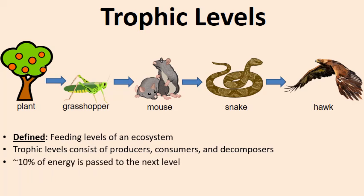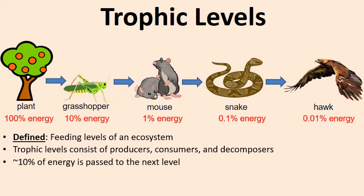When energy is passed from one trophic level to the next, it's passed at a fairly inefficient level — about 10%. The producer, the plant, produces 100% of the energy. As energy moves to the grasshopper, only about 10% moves up. When mice eat the grasshoppers, they only get 10% of what the grasshoppers had — which is 1% of what the plant made. At the snake, only 0.1% of the plant's energy remains, and at the hawk, only 0.01%.